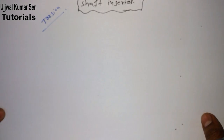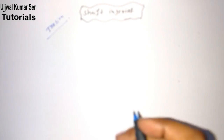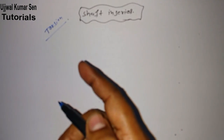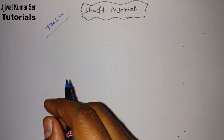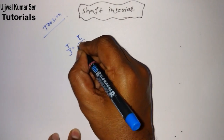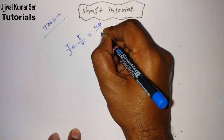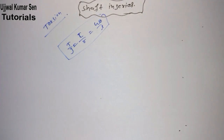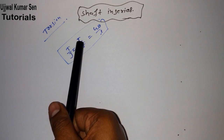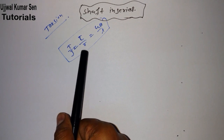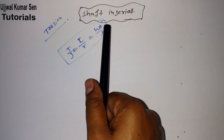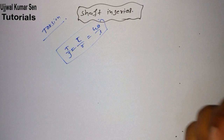In torsion, the most important equation — and probably the one you want to know — is: T/J = τ/r = Gθ/L. Here, T is torque, J is polar moment of inertia, τ is shear stress, r is radius, G is modulus of rigidity, θ is angle of twist, and L is the length of the shaft.